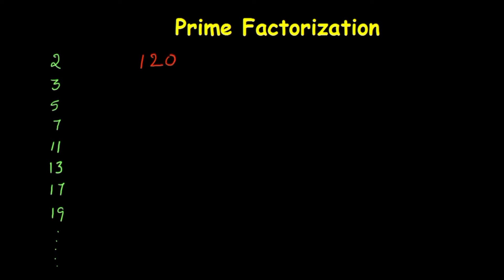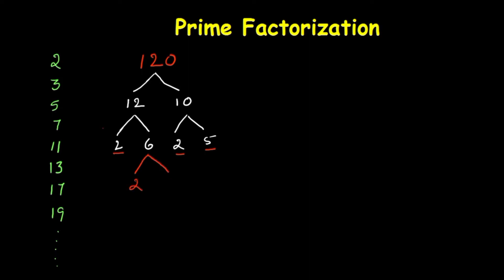For 120, you can get a factor pair like 12 times 10. Now how can 12 be divided? That is 2 times 6. And how can 10 be divided? That is 2 times 5. Now 2 is a prime number, and 5 is also a prime number, but 6 is not a prime number. So 6 can be divided again into 2 times 3.